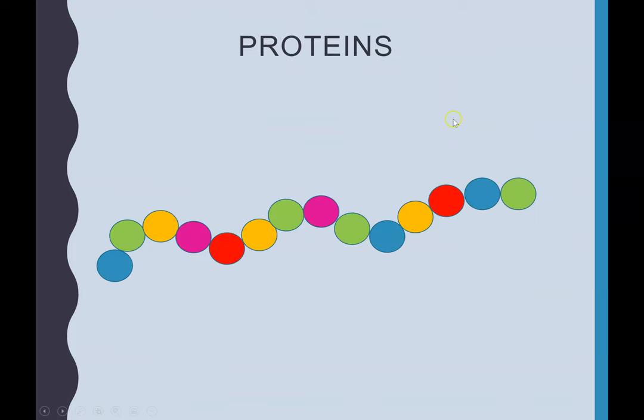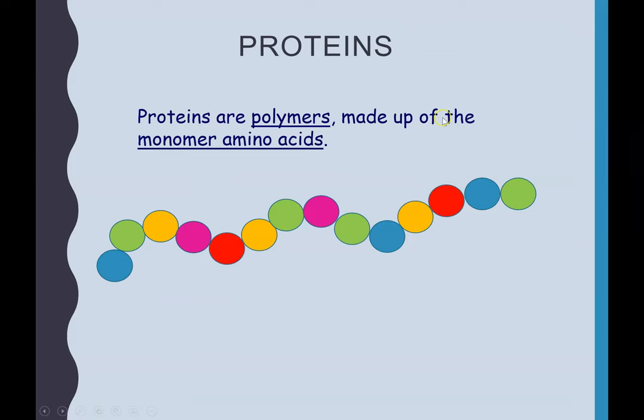So carrying on with the proteins as polymers. If you are asked what is a protein, it is a polymer, and the monomers that they're made up of are amino acids. Each different color circle is a different amino acid. There's 20 different amino acids, and you have a different sequence of the different 20 in each protein.